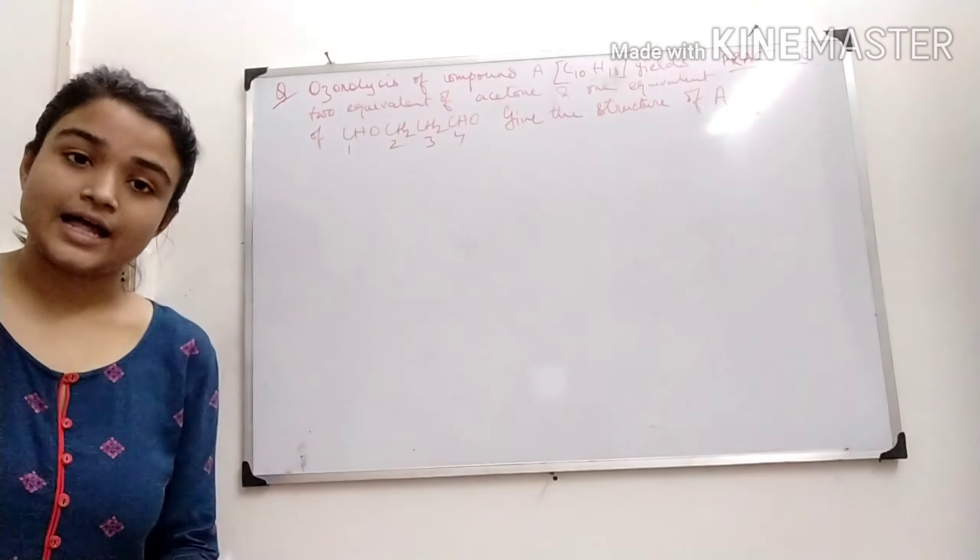Another problem: a monomer of a polymer on ozonolysis gives 2 moles of formaldehyde and 1 mole of 2-ketopropanal (CH3-CO-CHO). Write the structure of the monomer. Same approach as the previous one — we do ozonolysis and get these products, so we need to reverse-engineer the alkene structure. Since there are 2 functional groups, aldehyde priority is higher than ketone — so this is 2-ketopropanal.